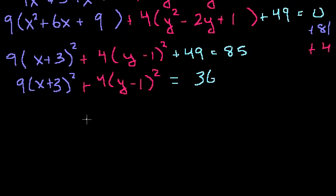You divide everything by 36. This term becomes x plus 3 squared over, see, 9 over 36 is the same thing as 1 over 4.